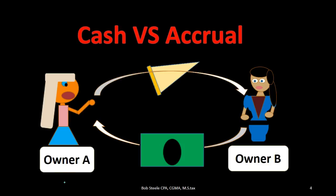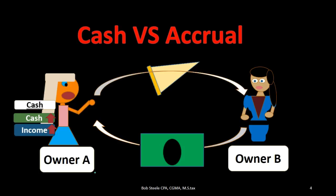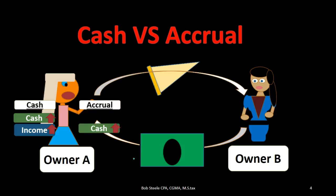We have two companies. Owner A owns a pizza place and owner B is purchasing a pizza. The pizza is being provided at the same point in time that cash is being received. Under a cash method, cash has been received and income is going up — because the cash is close enough to the fire, close enough to record it at that point in time. Under an accrual method, we're going to have the same entry: cash is still going up and we still record the income — because our GPS system pinpointed the time that we earned the money, which is when we made and delivered the pizza.